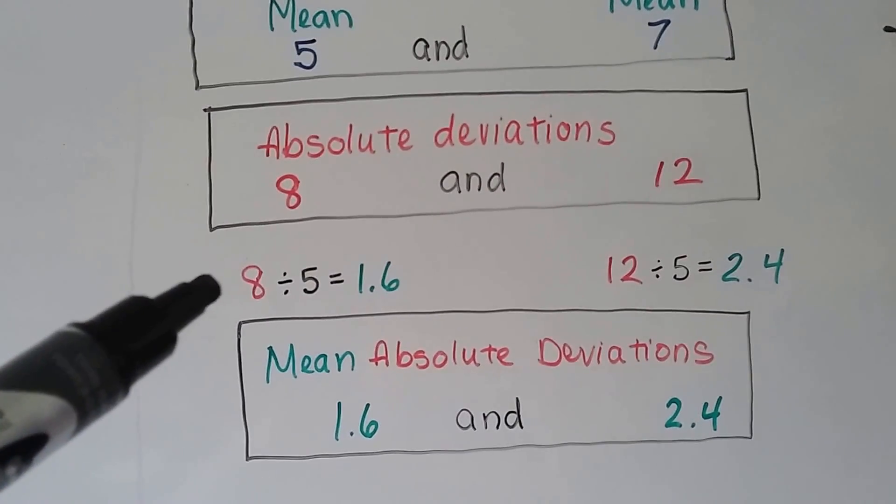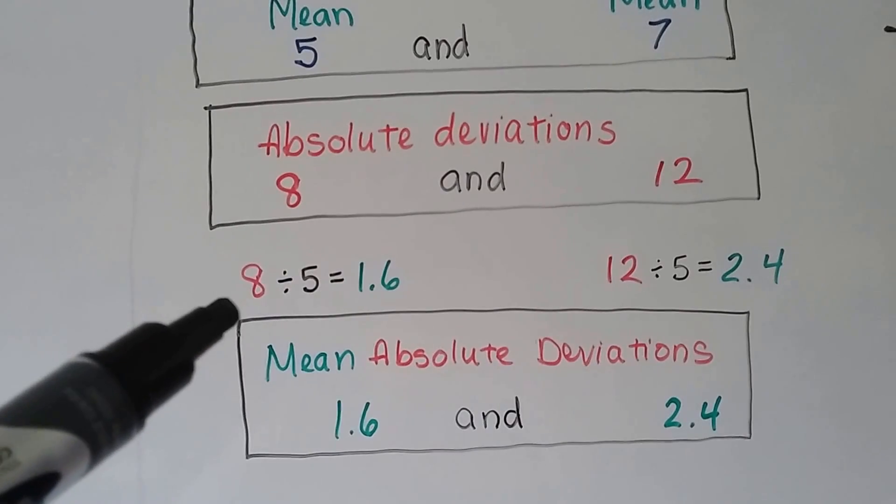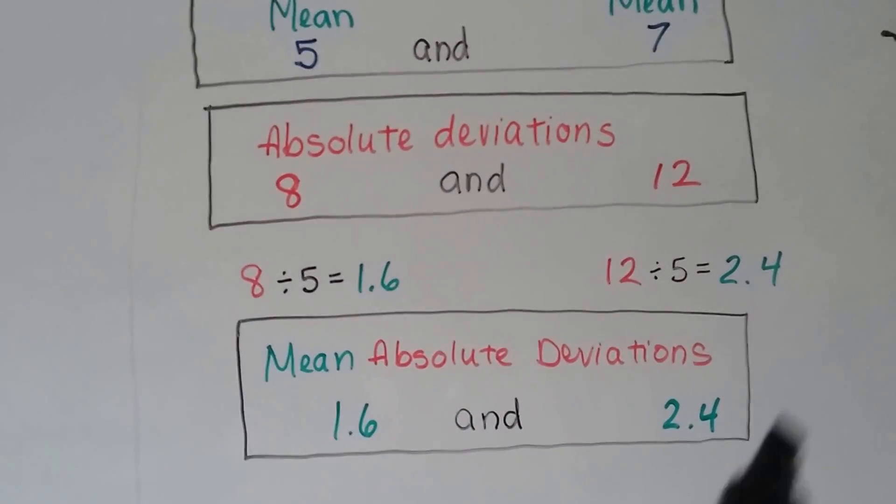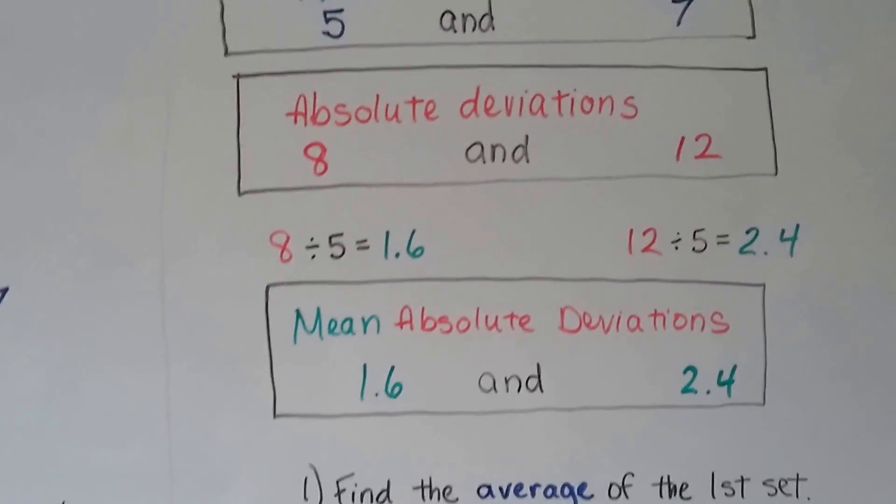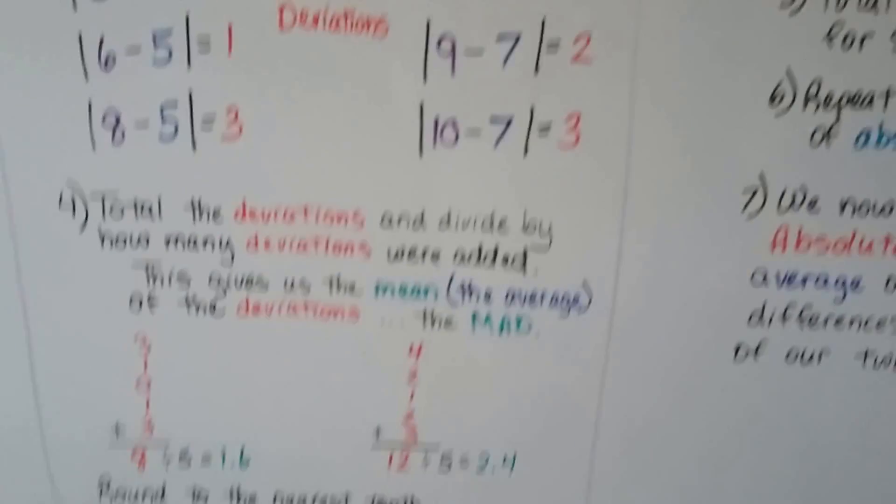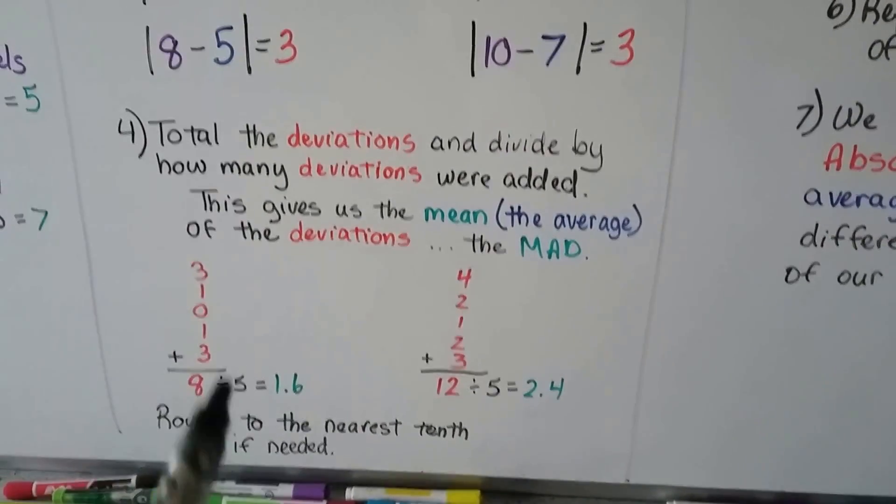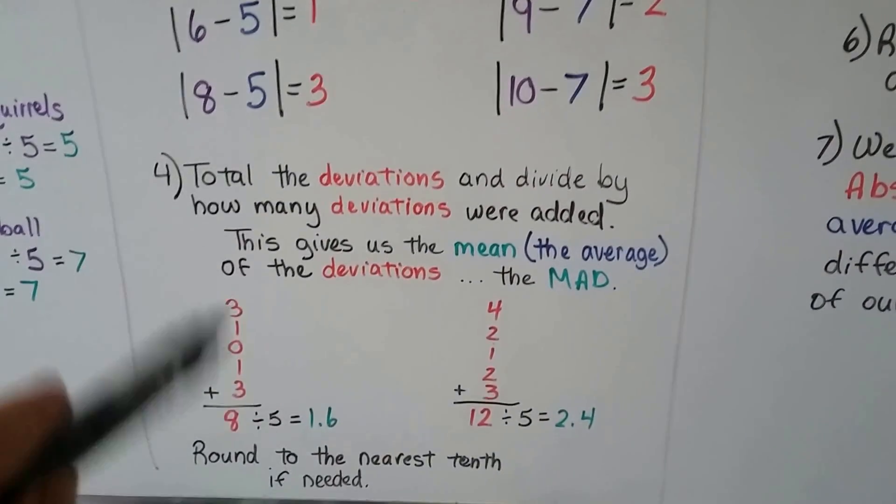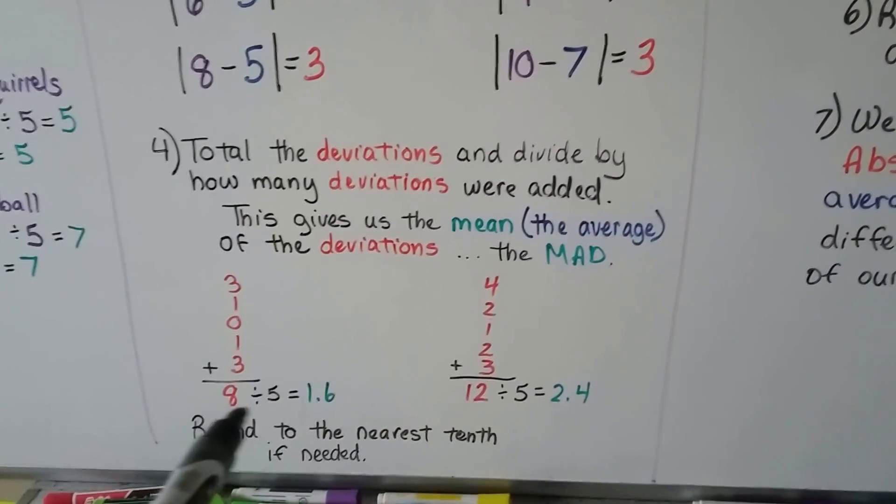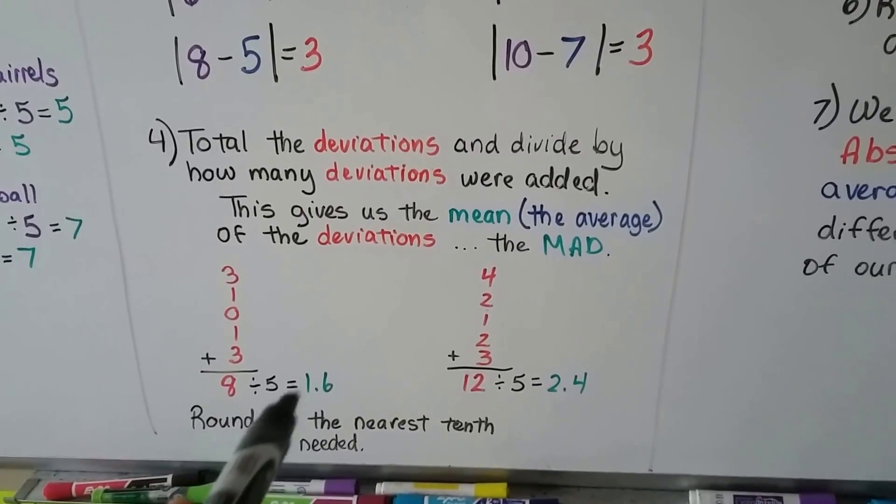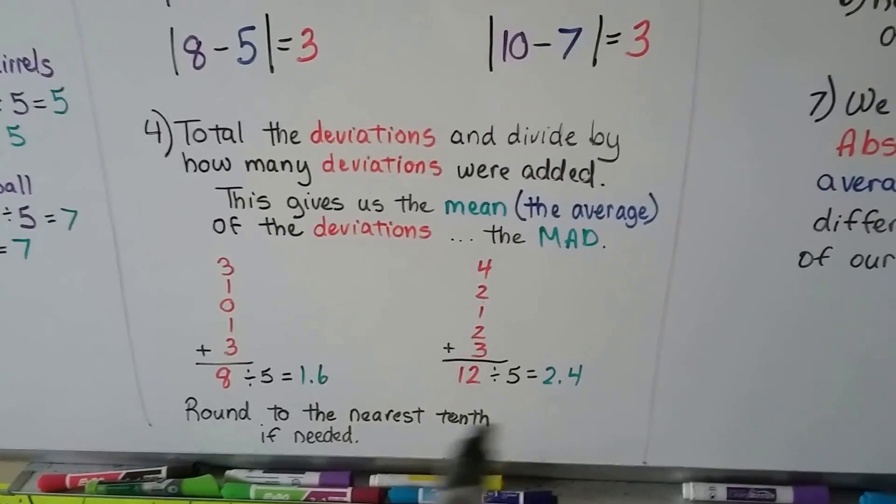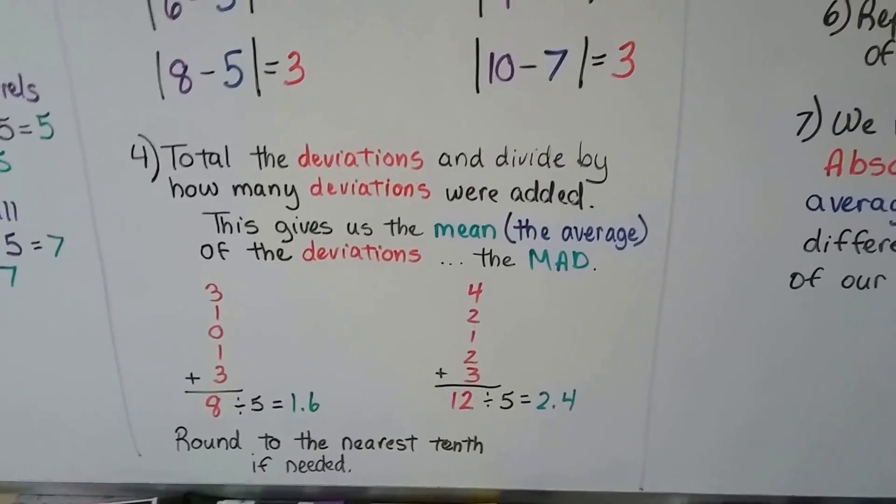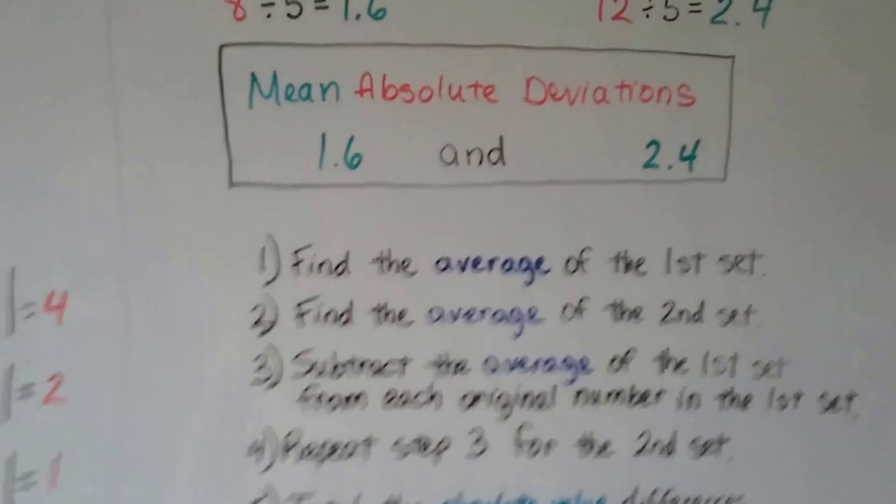Our absolute deviations are an 8 and a 12. And we found that the mean absolute deviation is a 1.6 and a 2.4. That's the mean absolute deviation when we took the difference, found the mean again, the average again, and came up with these two numbers. That's the MAD. That's the mean absolute deviations.